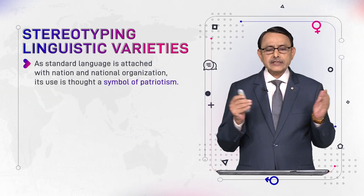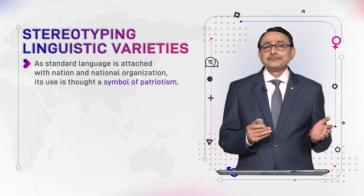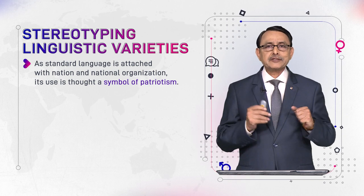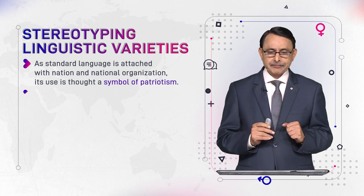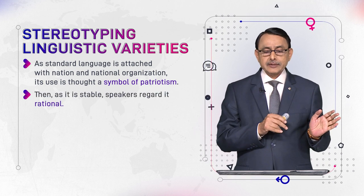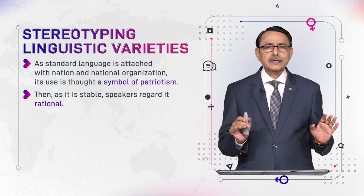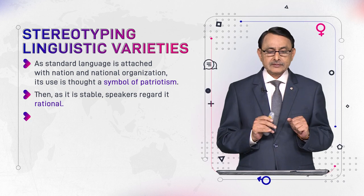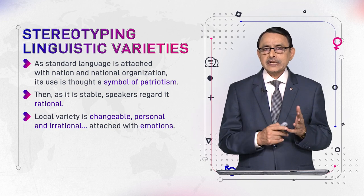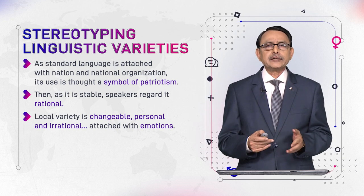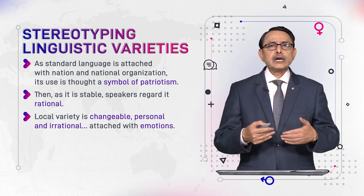As standard language is attached with the nation and national organization, its use is thought of as a symbol of patriotism. This is another form of stereotyping that gives importance to the standard variety. Because it is stable, speakers regard it as rational. The variety that does not change is regarded as rational, whereas the local variety is changeable, personal, and irrational. All these negative qualities are conventionally associated with the vernacular or non-standard variety. This is how stereotyping happens.